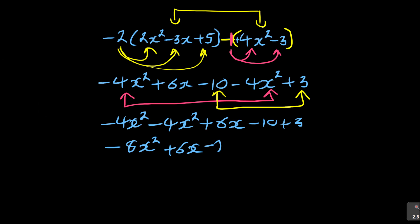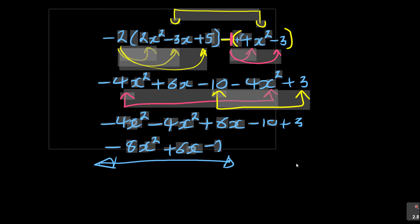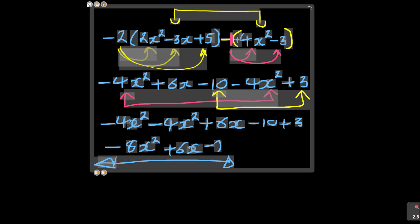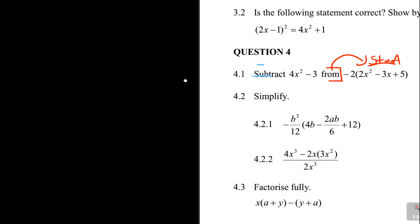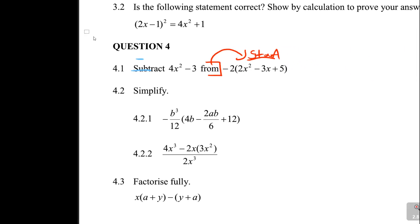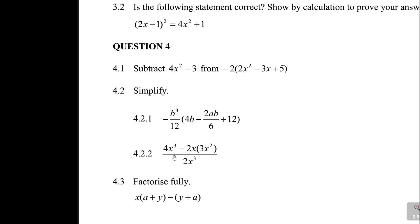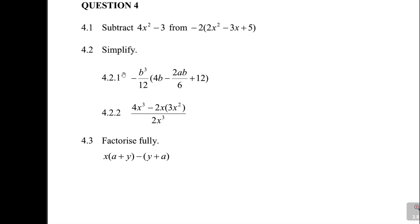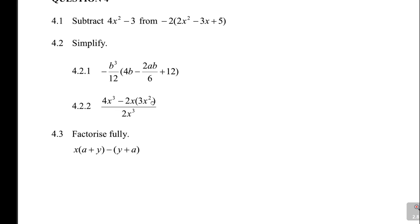Always use a calculator to test your answers, even if you want to master it mentally. So the final answer is: negative eight x squared plus six x minus seven. That's that one done. Let's try another one - it's a short video. Simplify the next expression for three marks.